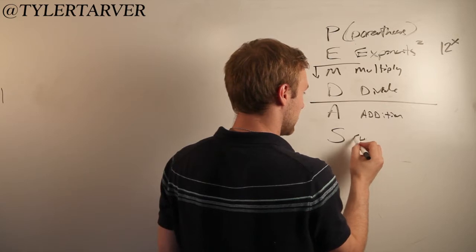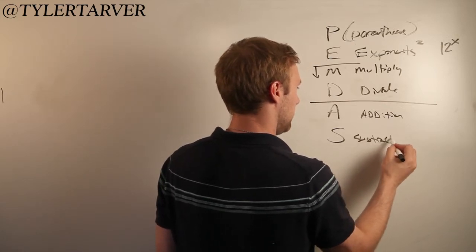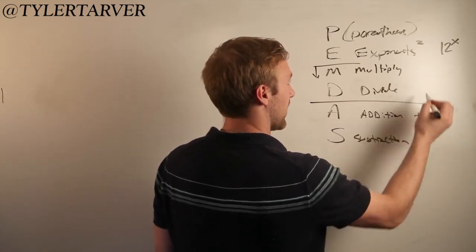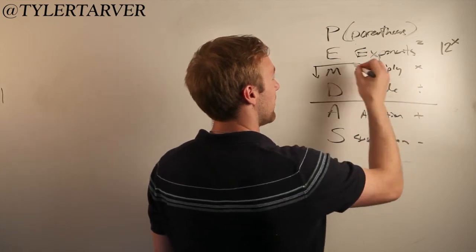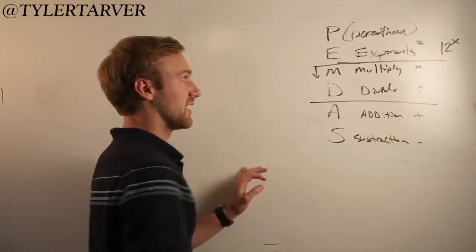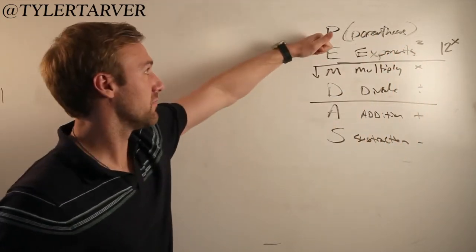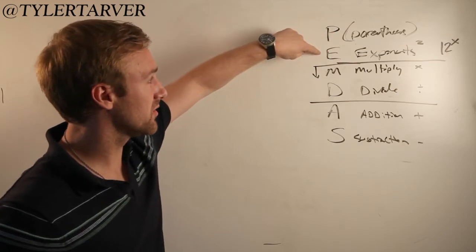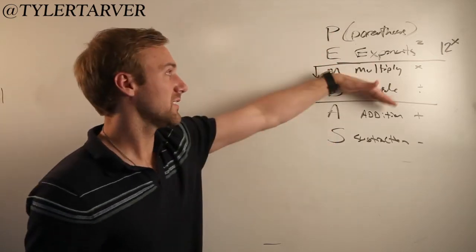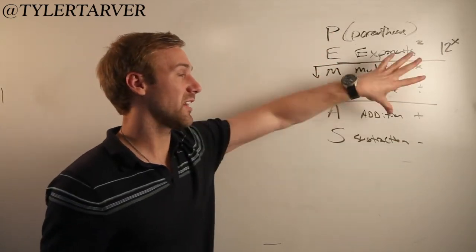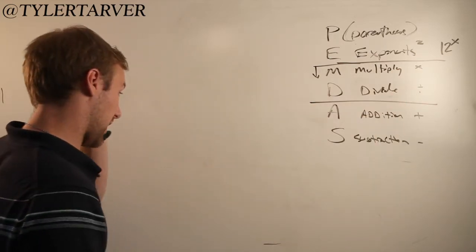So addition, subtraction, multiply, divide, then parentheses, exponents — they're really three tiers. Most important, second most, third, fourth. I say third and fourth because I can group them together based on where they go. So let's look at a problem.